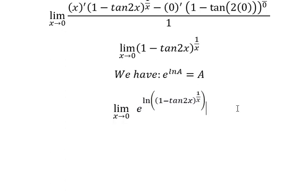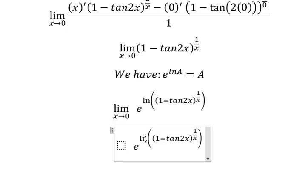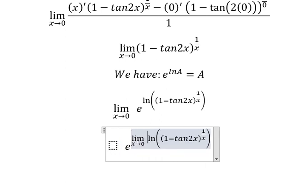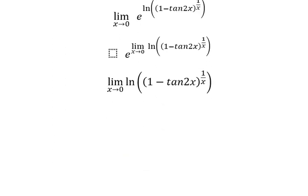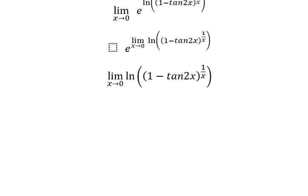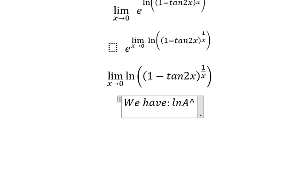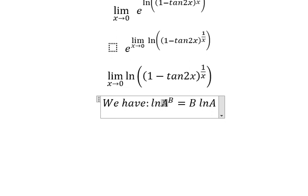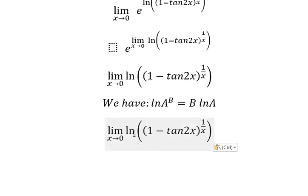Next, I put this aside and concentrate on this part only. We use the second formula: ln(A^b) = b·ln(A). Here, capital A is (1 − tan(s)) and b is (1/s), so we transform the expression accordingly.